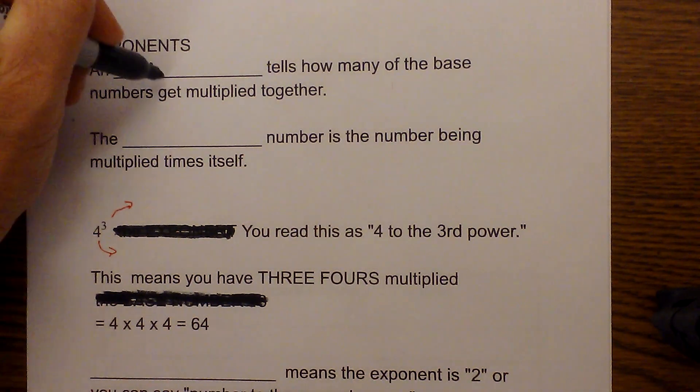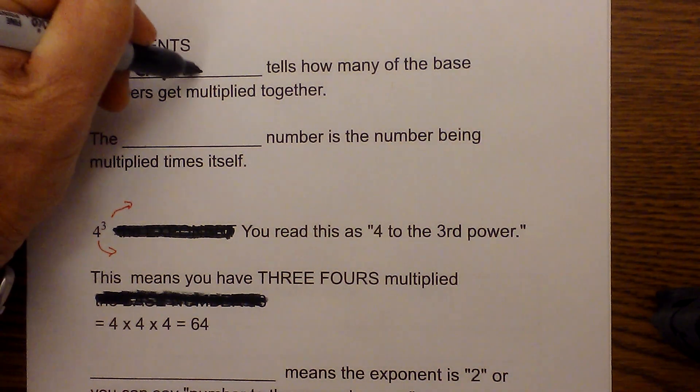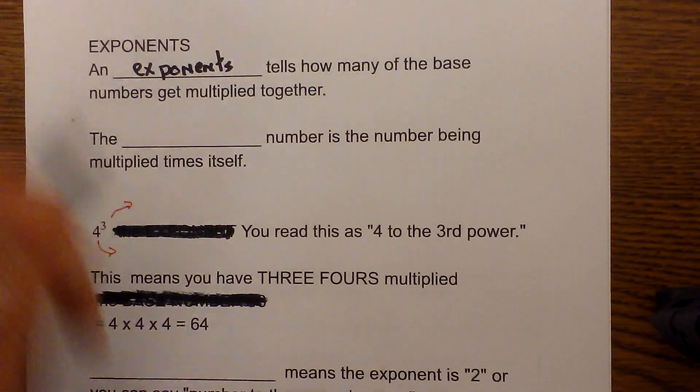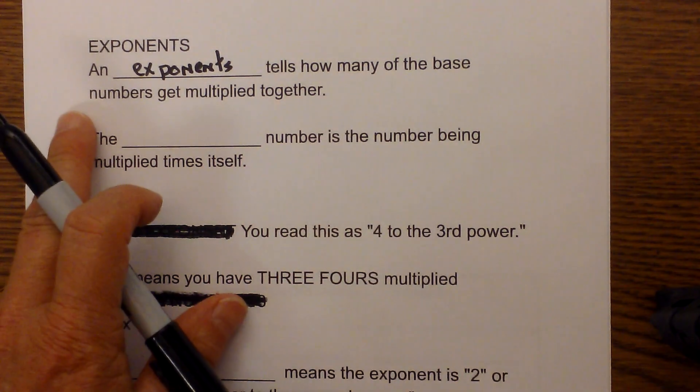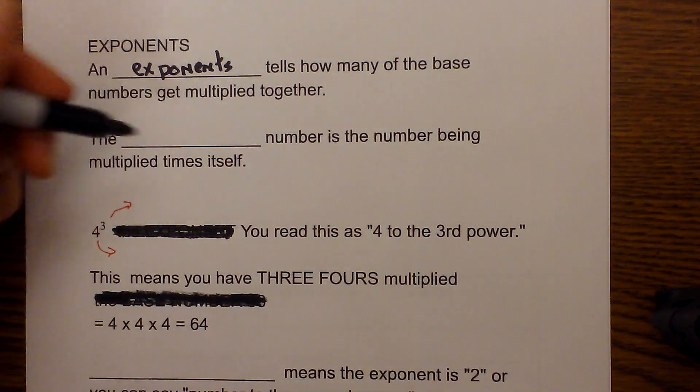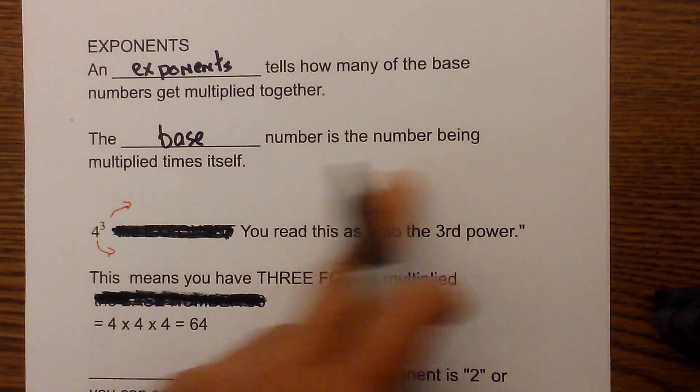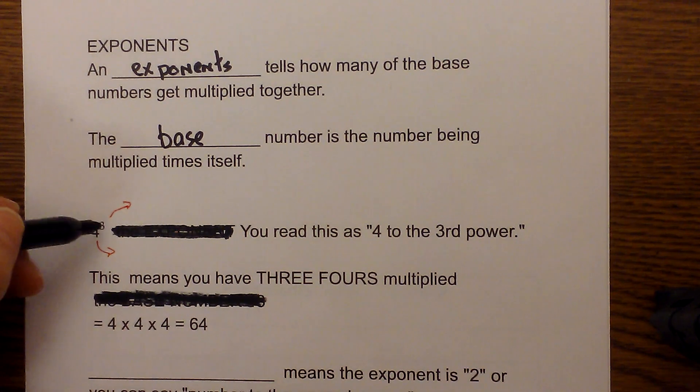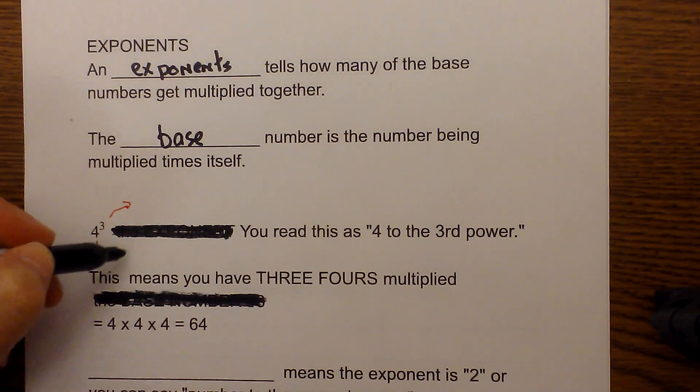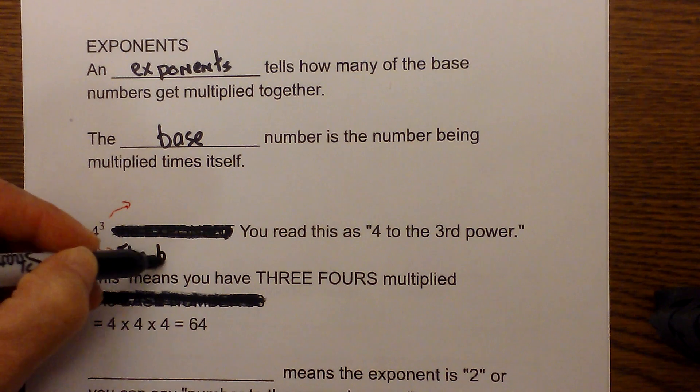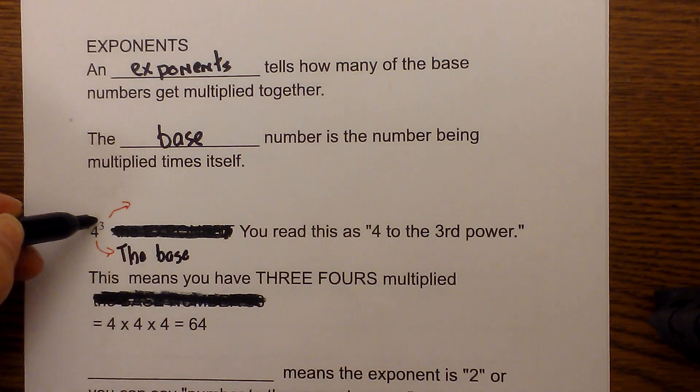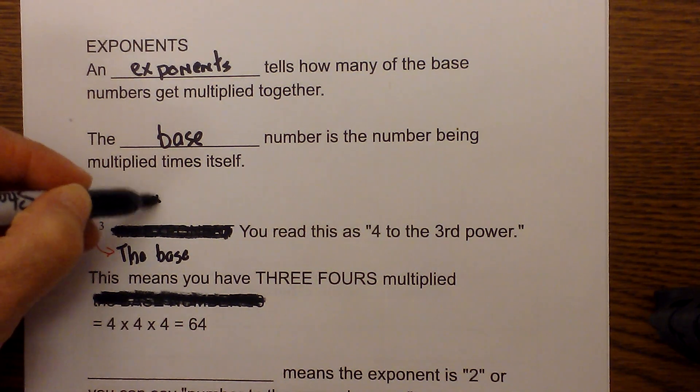An exponent tells you how many of the base numbers get multiplied together. The base number is the number being multiplied by itself. If you look at this, the 4 is the base and the 3 is the exponent.